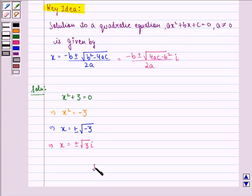Therefore our solution to this question is plus minus root 3 iota. I hope you understood the question and enjoyed the session. Goodbye.